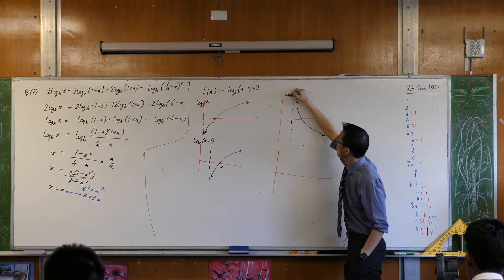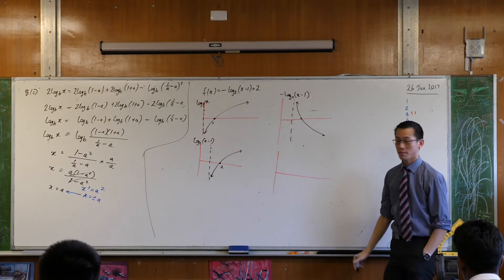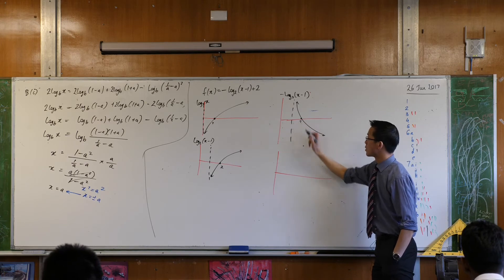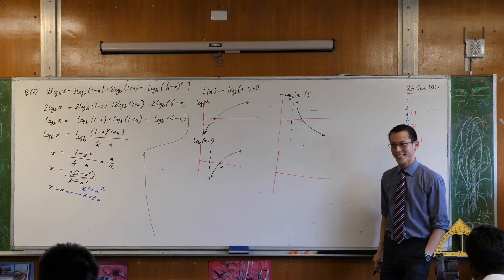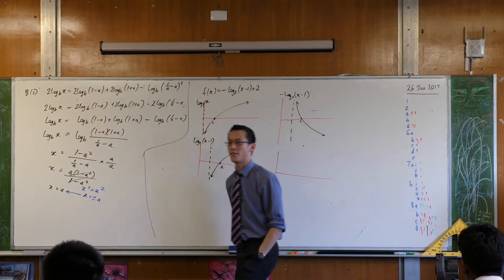So this guy here is minus log base 2 of x minus 1. Are you happy? And I know where that is. Okay. Lastly now, and I'm actually ready to draw this thing, I'm going to add 2. What effect does that have on the graph?